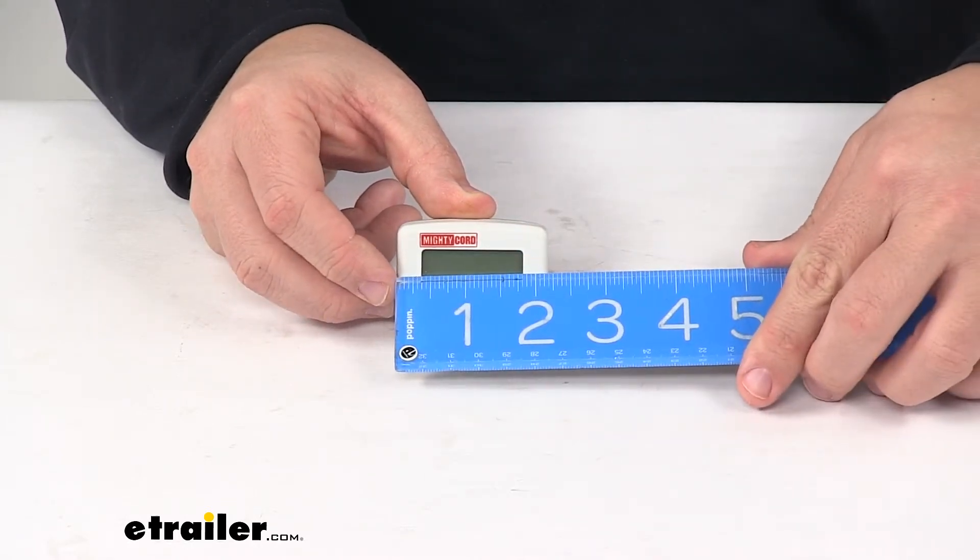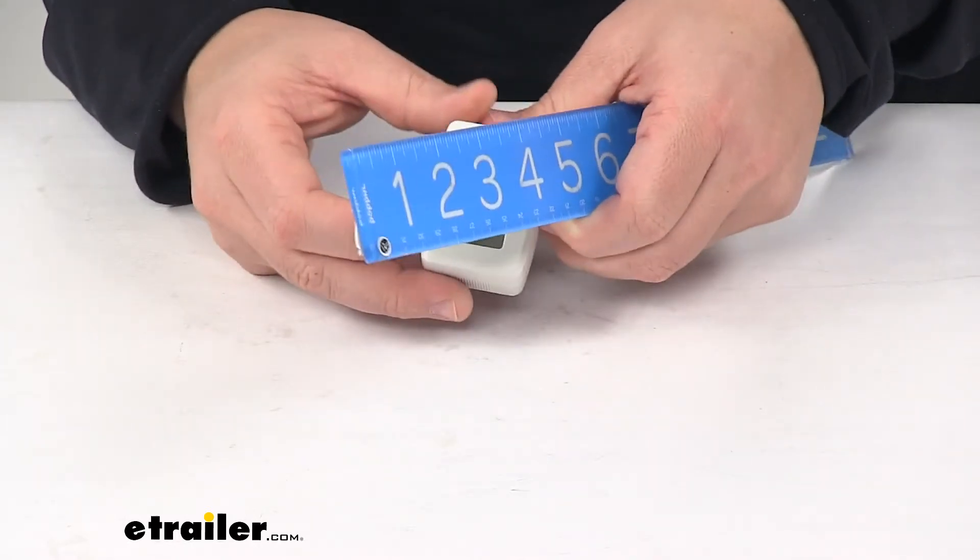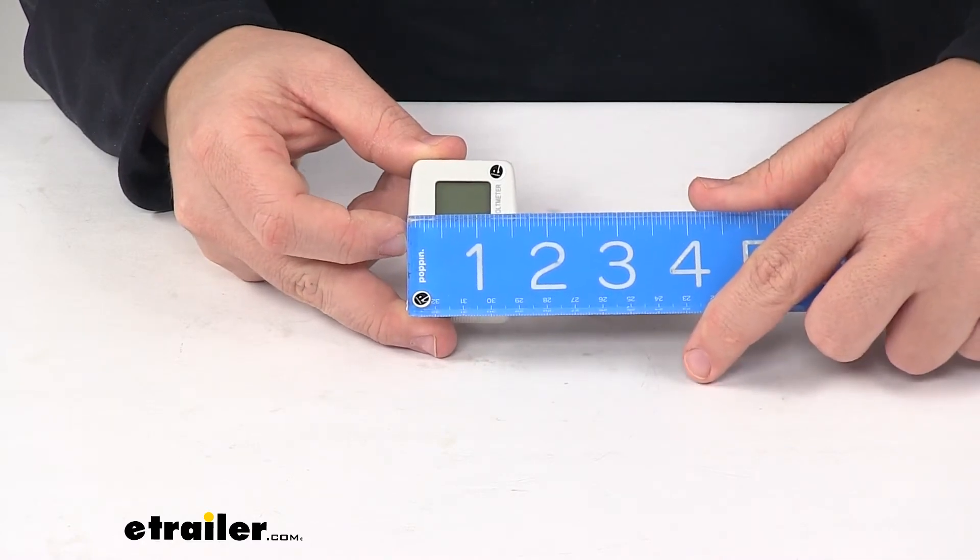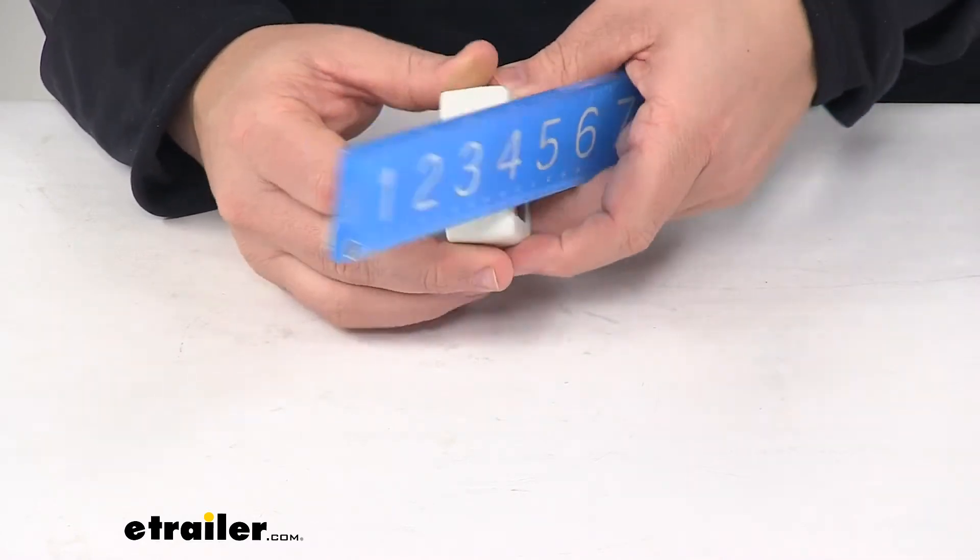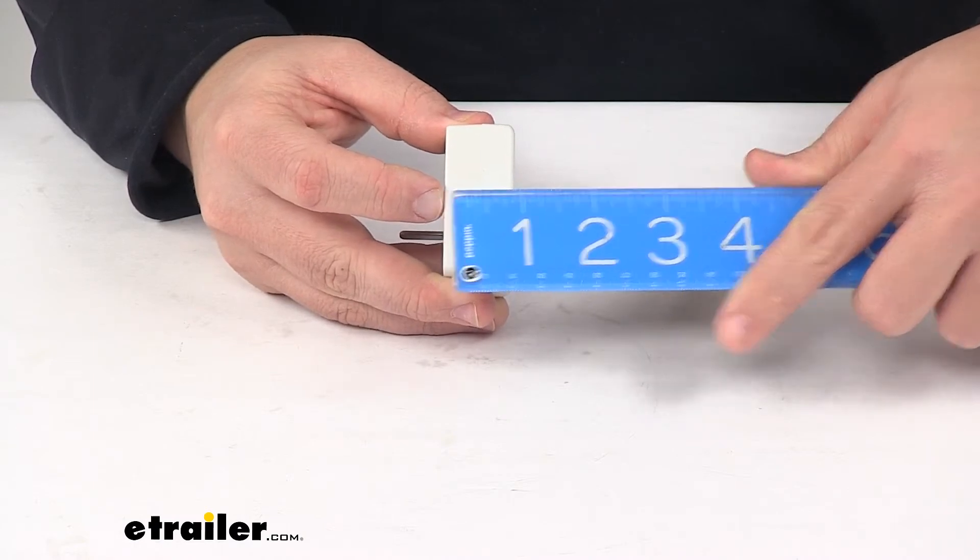Going edge to edge this direction, it's about two and one-eighth inches. Top to bottom is about one and nine-sixteenths inches. Front to back is about one inch.